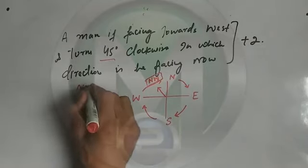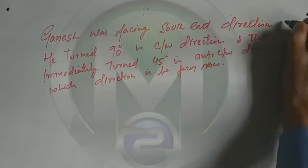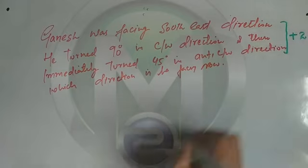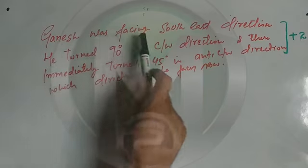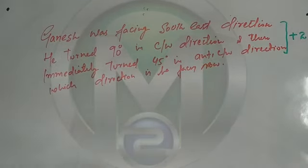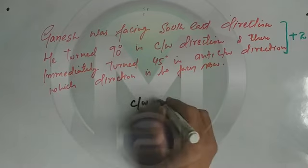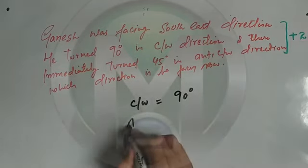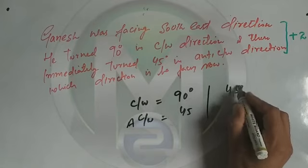So the answer is North-West direction. That is question number one. Now question number two — this is also a plus-two level paper. Ganesh was facing South-East direction. He turned 90 degrees in clockwise direction and then immediately turned 45 degrees in anti-clockwise direction. Which direction is he facing now?